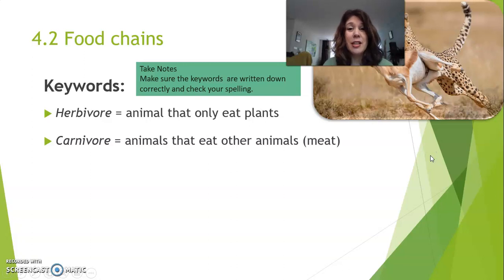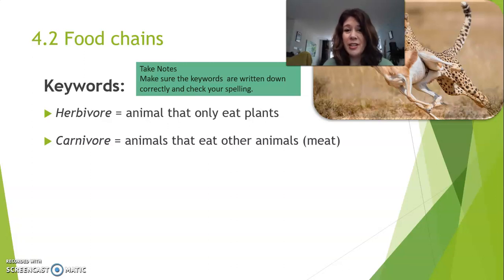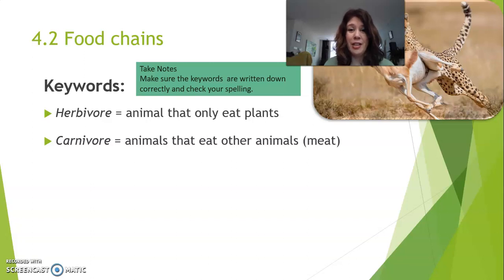Carnivore. A carnivore is an animal that eats other animals — he eats meat, it's a meat eater. Now, meat could also be insects. So if a bird eats an insect, that's also considered meat. But also, the cheetah is a carnivore because it eats the gazelle. The gazelle is his meat.